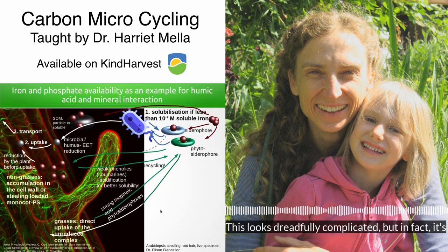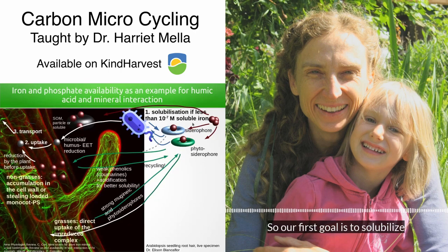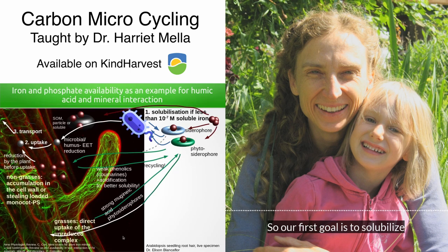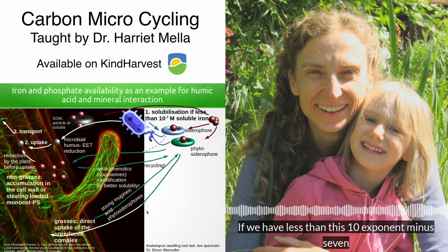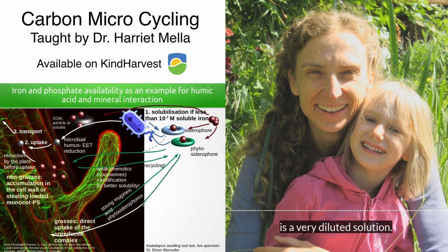This looks dreadfully complicated but in fact it's not. So our first goal is to solubilize the iron if we have less than 10 to the exponent minus 7 — it's a very diluted solution.